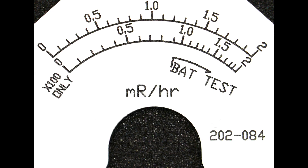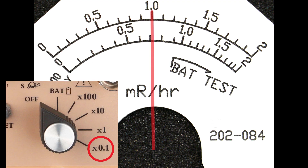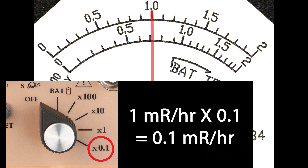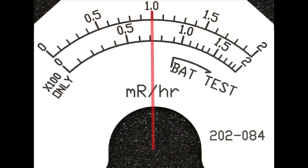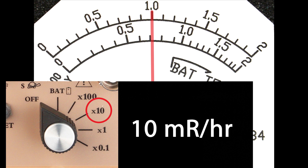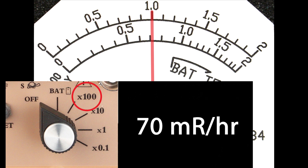The bottom scale is nonlinear because of dead time loss from the detector. If the needle is pointing as indicated in this image and the rotary selection switch is on the times 0.1 multiplier, the reading is 0.1 mr per hour, which is 1 mr per hour multiplied by 0.1. The same needle indication at the other multiplier positions would be 1 mr per hour on the times 1 multiplier, 10 mr per hour on the times 10 multiplier, and 70 mr per hour on the times 100 multiplier.